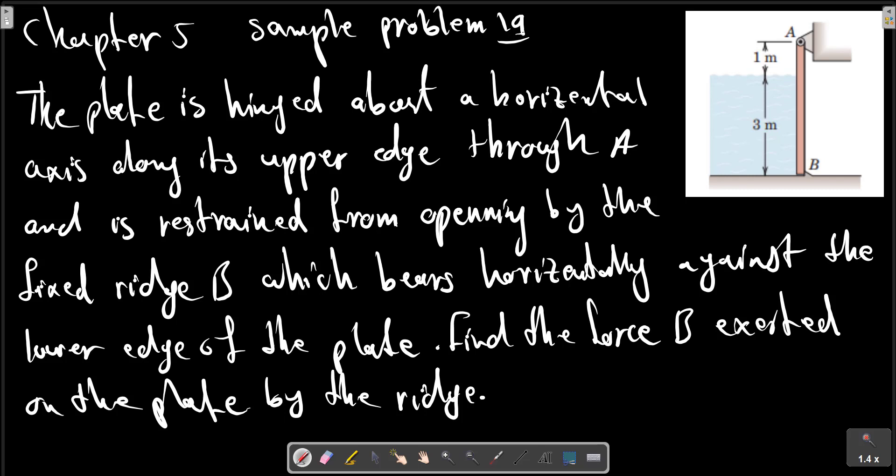The plate is hinged about a horizontal axis along its upper edge through A and is restricted from opening by the fixed ridge B which bears horizontally against the lower edge of the plate. Find the force B exerted on the plate by the ridge.